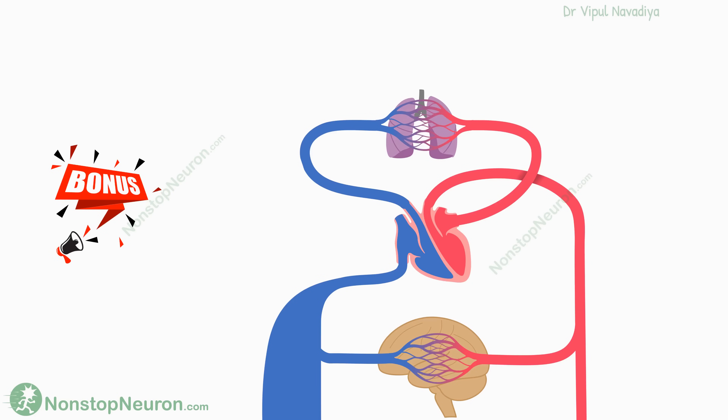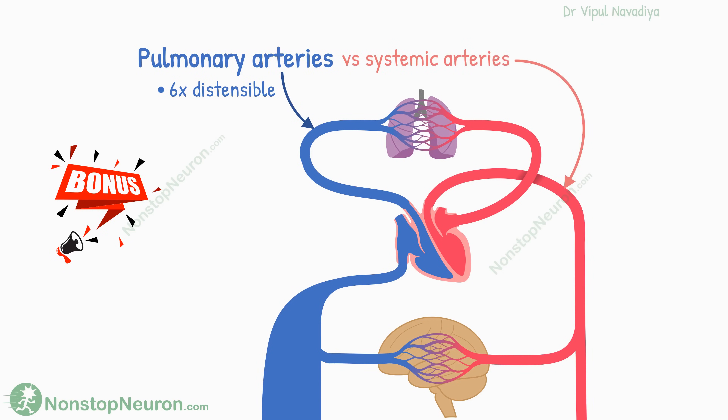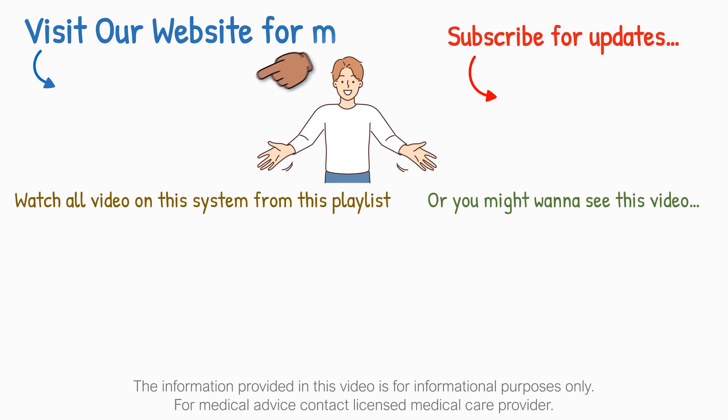For sticking with me until the end, here's an interesting bonus point: pulmonary arteries are six times more distensible than systemic arteries, but as they operate at about a sixth of the systemic pressure, they get expanded to the same extent. That's it for this video — please share it with your friends. Thanks for watching, see you in the next video.